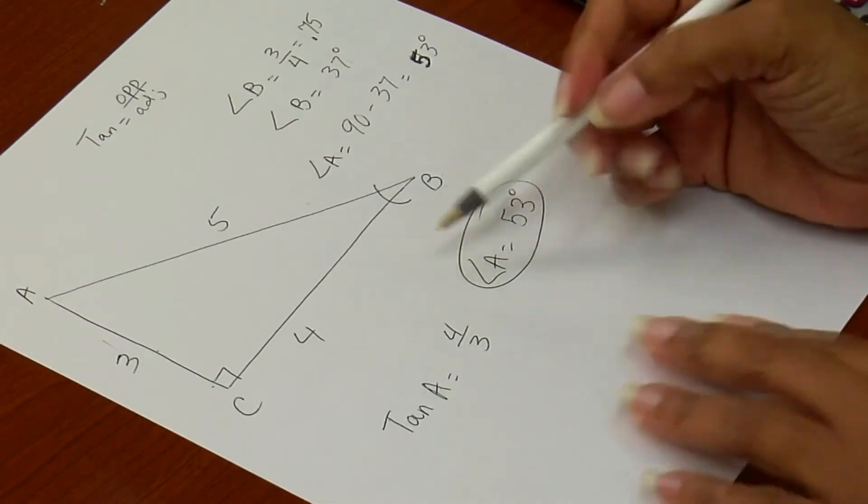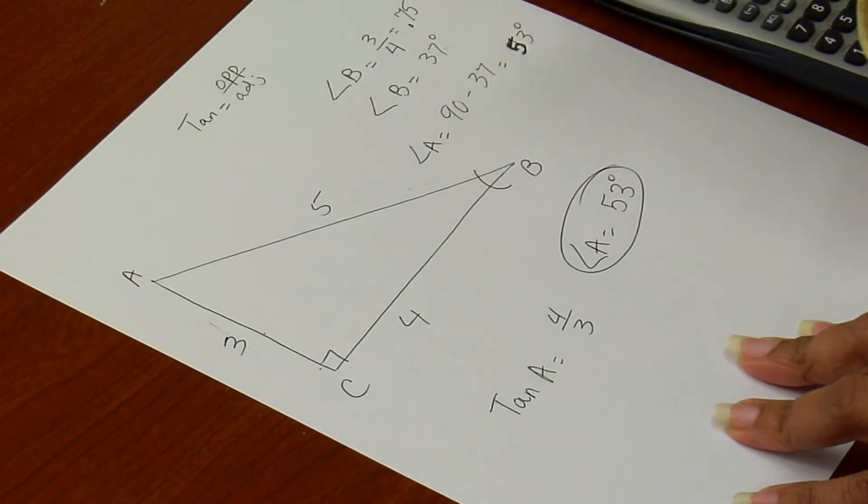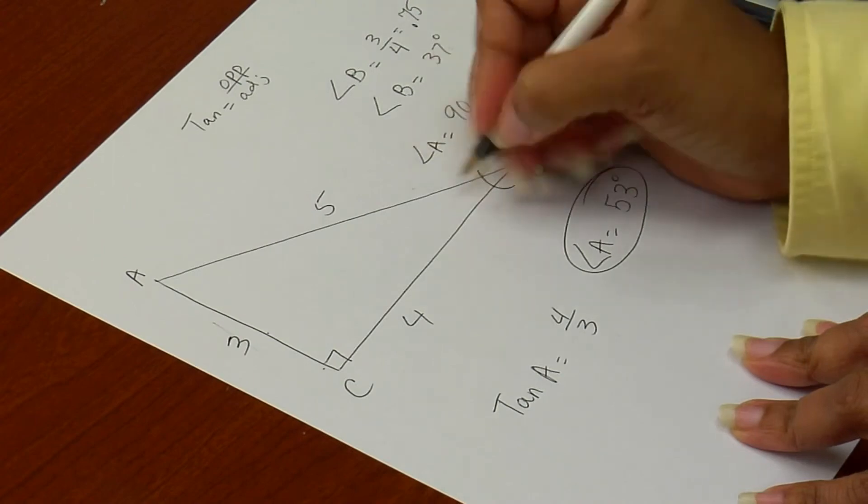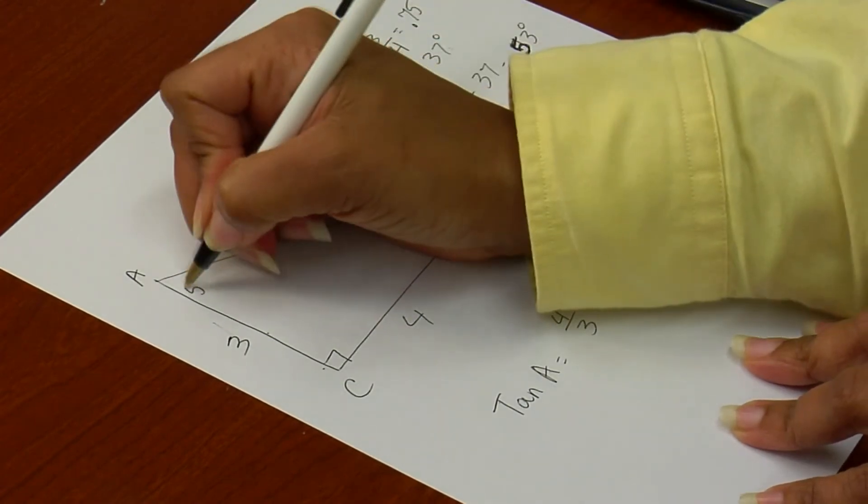So for this triangle, my right triangle, using my tan ratio, that is angle B is 37 degrees, and angle A, 53 degrees.